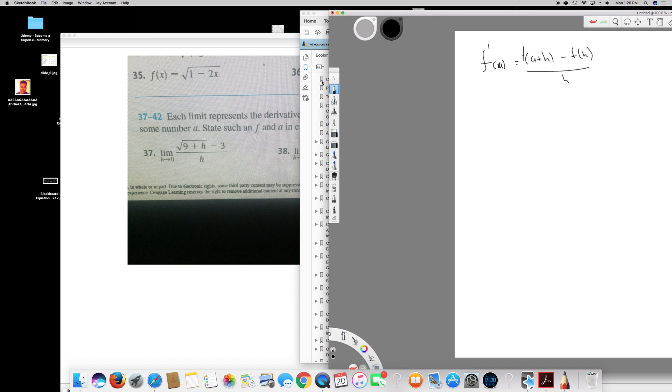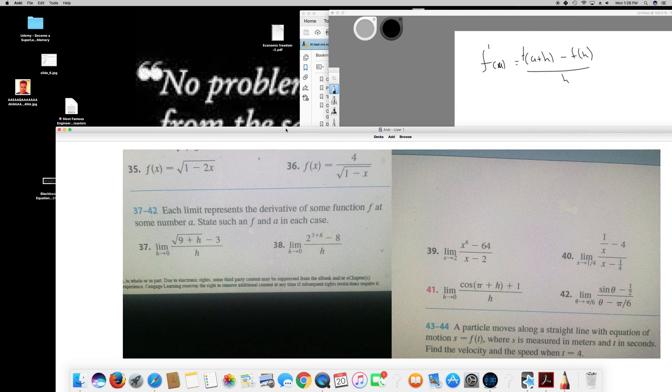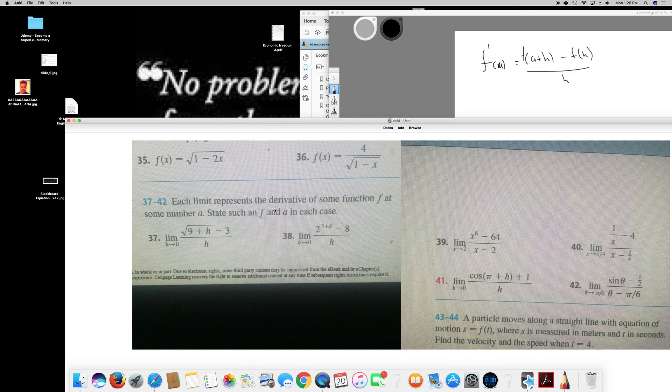So this is going to be my formula. From this formula I can find these values. So first of all, the first question is square root of 9 plus h minus 3 over h.